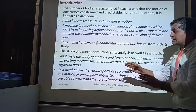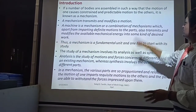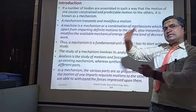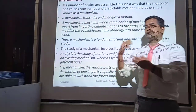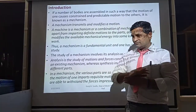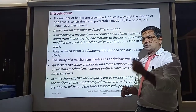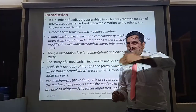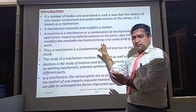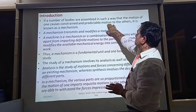If a number of bodies — links or elements — are assembled or connected in such a way that the motion of one causes a constrained and predictable motion to the other, that is a mechanism. In a mechanism with four links, for example, one link must be fixed. The basic Grubbler's criteria says that in order to get a mechanism, one of the links must be fixed. Unless we fix one of the links among the existing four, we will never get a mechanism. The remaining three links are free to move, and applying force on one transmits motion to the next.